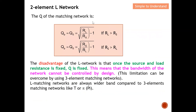The Q of the matching network is given by a specific equation. To apply it, identify which resistor is larger. Simply put, Q equals the larger resistor divided by the smaller resistor. The disadvantage of the L network is that once the source and load are fixed, Q is also fixed — you cannot control Q once the source and load impedances are predetermined.